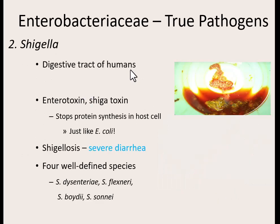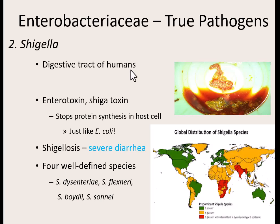Another of the true pathogens is Shigella, also found in the digestive tract of humans. It's also in the Enterobacteriaceae group, and it produces a toxin called the shiga toxin — the same toxin that E. coli O157:H7 makes. This same type of toxin stops protein synthesis, which is not good since our cells can't make protein. It causes severe diarrhea. There are four strains — four species of Shigella.